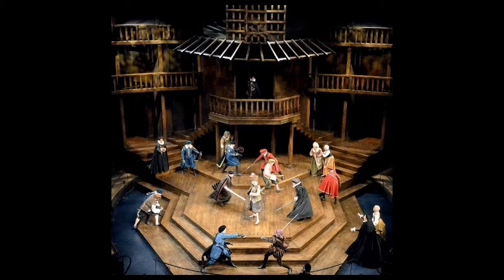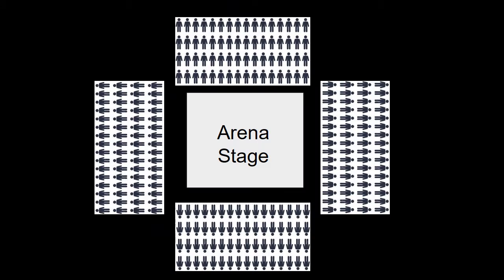The next type is called the arena. The arena probably makes you think of sports venues like the Bridgestone Arena where they play hockey here in Nashville — and you're right. An arena stage is a stage where people are all around the performers. It could be a circle all around or on four different directions: front, back, left, and right.